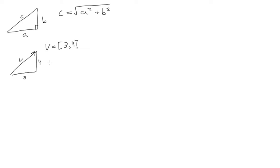So if we want the length of V, we write it like this. It's the length of V with two bars on each side, that's the way to denote length, is equal to the square root of 3 squared plus 4 squared. Now, if we just work through this, that's the square root of 9 plus 16, which is equal to root 25, which equals 5. So the length of V is equal to 5 units.